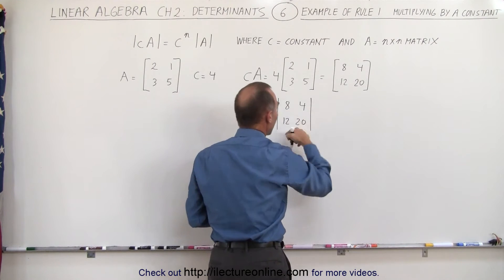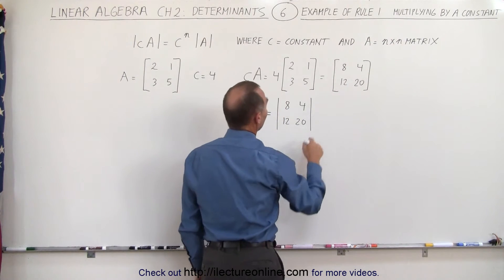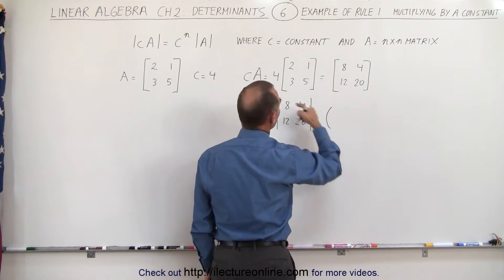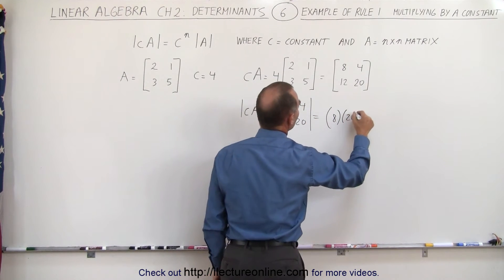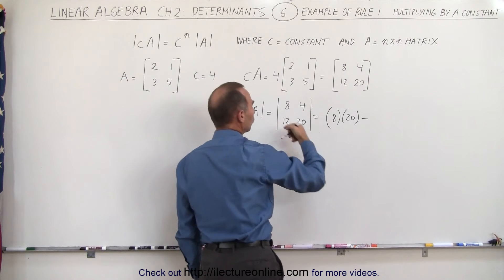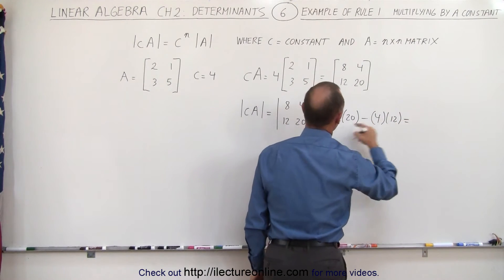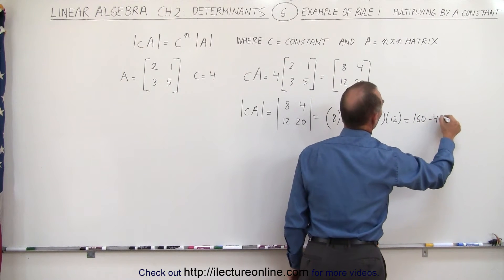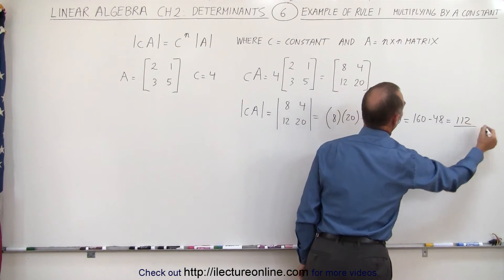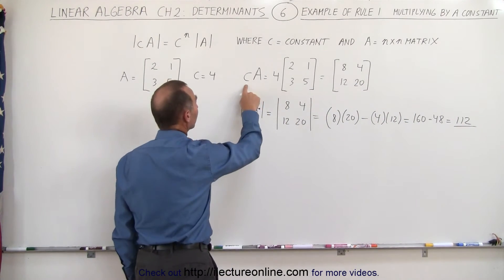We get the very same elements. We simply put the vertical lines down instead of having the little hooks at the end. And then this would be equal to the diagonal multiplied together, 8 multiplied times 20 minus the product of those two, which is 4 times 12. That would be equal to 160 minus 48, which is equal to 112. So that's the determinant of the product of the constant times the matrix.